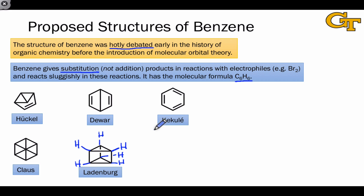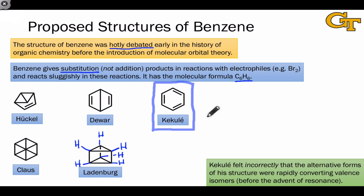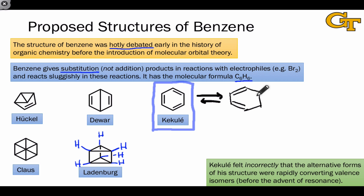Ultimately, the person who came closest was a chemist named Kekulé, who proposed the now-familiar alternating single and double bond six-membered ring structure of benzene in the 1800s. But Kekulé wasn't exactly right — he knew the structure was incomplete and proposed that there was a rapid equilibrium between this structure and what we would now recognize as the alternative resonance form of benzene, with the double bonds in alternative positions. He felt that at low enough temperatures we should be able to isolate one or the other of these isomers as constitutional isomers.